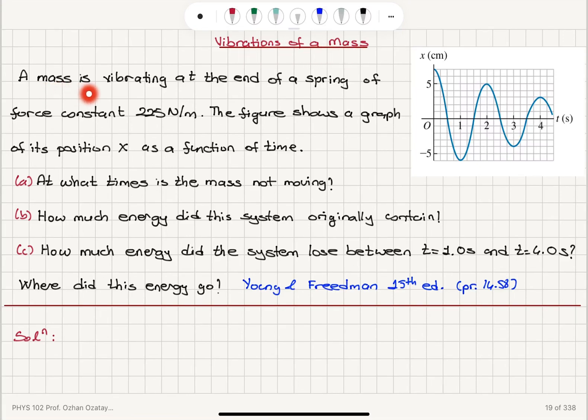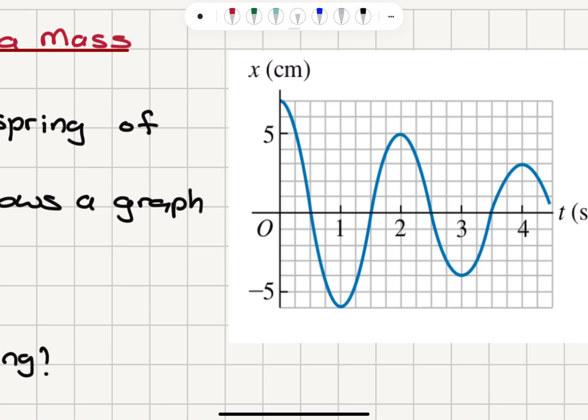Vibrations of a mass. A mass is vibrating at the end of a spring of force constant 225 newtons per meter. The figure shows a graph of its position x as a function of time.